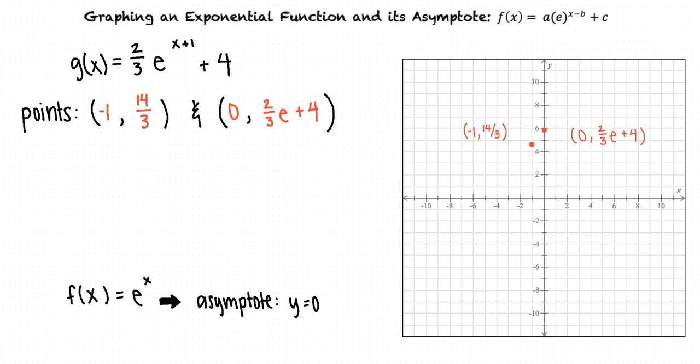Since the plus four in our function corresponds to a vertical translation four units upward, we will see that our function approaches four as x decreases without bound. This means that the graph has a horizontal asymptote at y equals four.